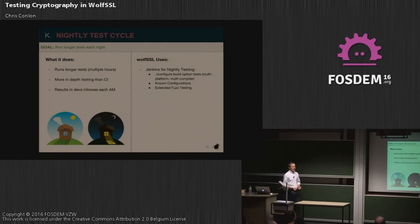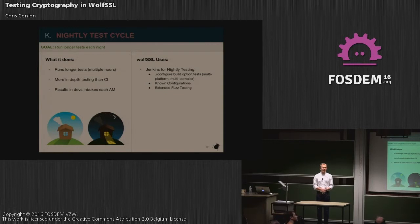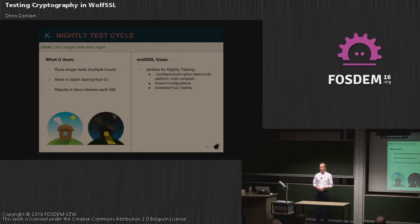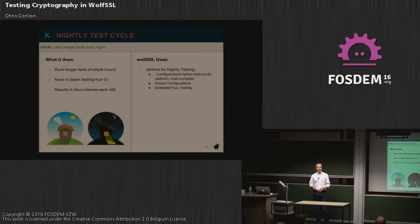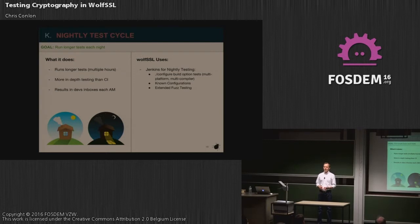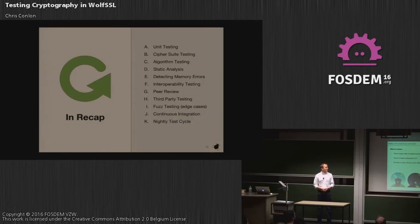Our nightly test cycle is also run by Jenkins. This runs more extended tests that we don't want to take up time during the day or run on every pull request. We again run our known configurations test, as well as an extended build options test. We use Autoconf to build and configure the library, and our list of options is ever-growing. We test with multiple compilers — GCC, Clang, and Intel's ICC — and across desktop platforms: OS X, Linux, and Windows. We also run extended fuzz testing overnight.